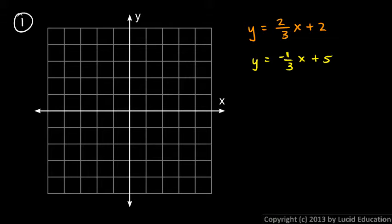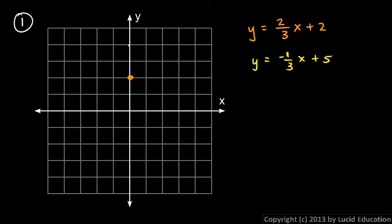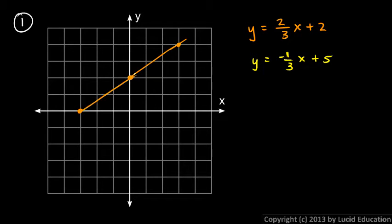So number one: y is equal to negative two-thirds x plus two. This is in slope-intercept form, has a slope of negative two-thirds and a y-intercept of two. So let's plot the y-intercept, and then from there, a slope of negative two-thirds means we go up two over three, which puts us here, and we can graph in the line. It will also go to this point in the other direction.